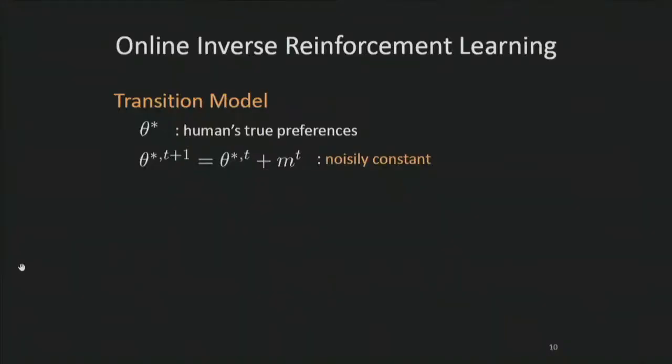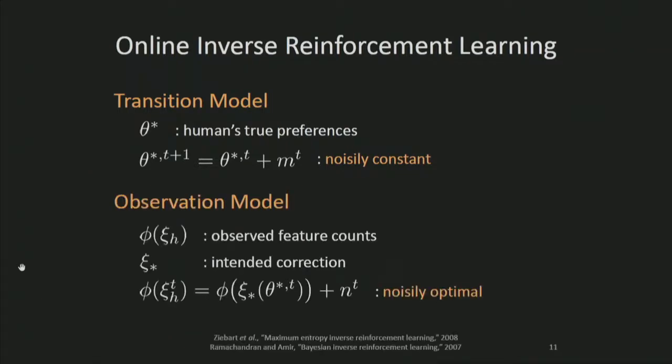I'll end this talk by focusing on the first contribution. During online inverse reinforcement learning, we model the human as having noisily constant preferences, theta star. These preferences form the hidden state which the robot wants to learn. In order to learn about theta star, the robot observes the feature counts along the human's corrected trajectory, xi h. Because human corrections aren't perfect, these observed feature counts aren't exactly what the human intended. Instead, they are noisily optimal with respect to the human's current preferences.